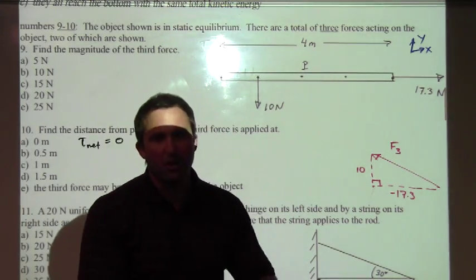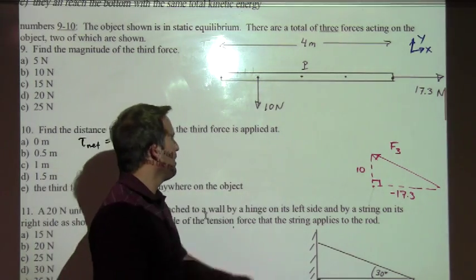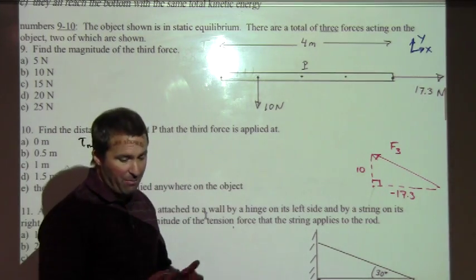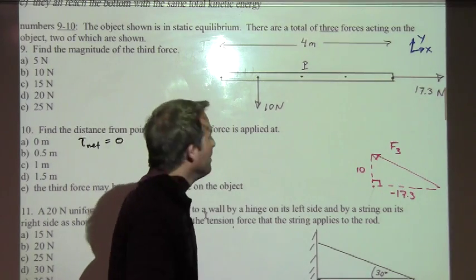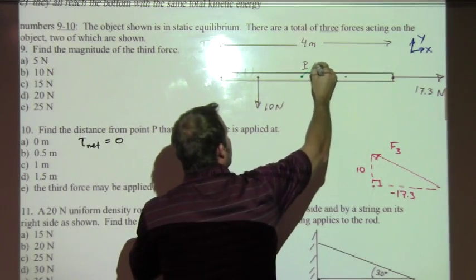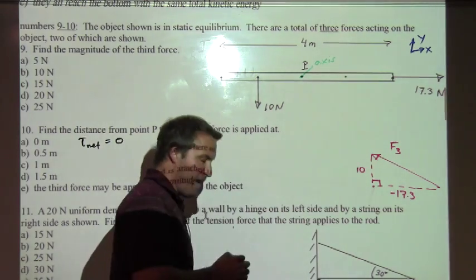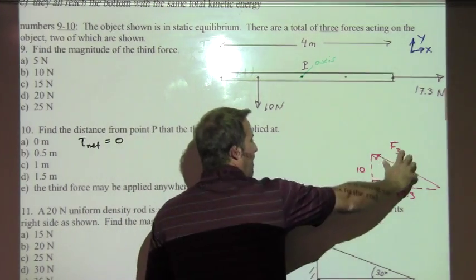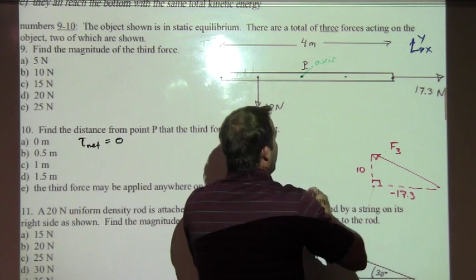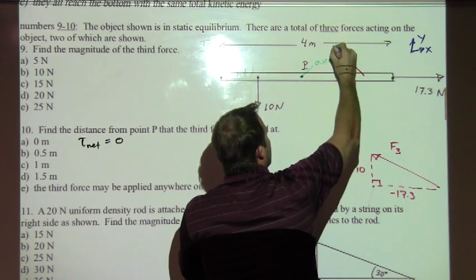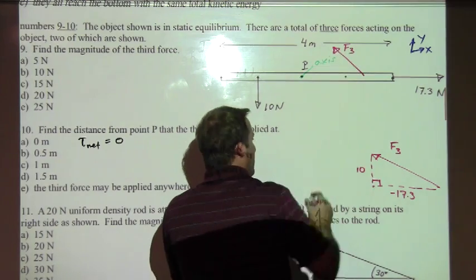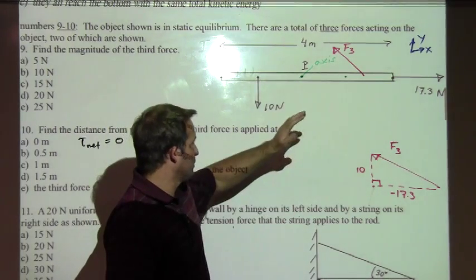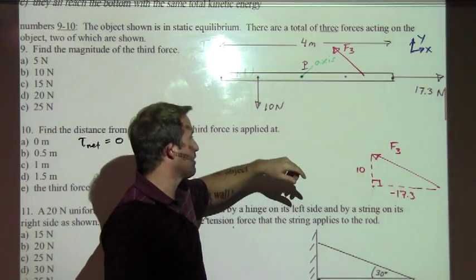I'm going to start off with an argument here. Here's point P. We want to find the distance from point P, so I'm going to choose point P as my axis point. It's already labeled there for us, it's tempting to just make that my axis point. Let's imagine taking our force three arrow and applying it just somewhere over here, somewhere on this side. We want to have the total torque be zero. Let's think about the torques created by these three forces as they're drawn now.